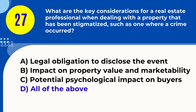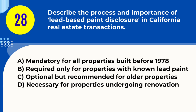Question 28. Describe the process and importance of lead-based paint disclosure in California real estate transactions. A. Mandatory for all properties built before 1978 B. Required only for properties with known lead paint C. Optional but recommended for older properties D. Necessary for properties undergoing renovation. Answer: A. Mandatory for all properties built before 1978. Explanation: In California, sellers must disclose the presence of lead-based paint for properties built before 1978 due to health hazards.